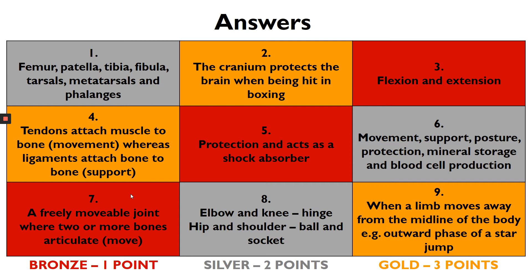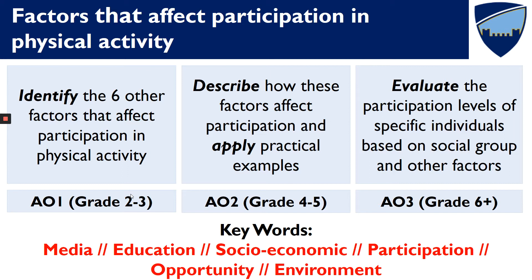Add up your answers, add up your points, see how many points you've got. So this week's lesson we're going to look at factors that affect participation in physical activity. We're going to identify the six other factors — that's sort of grade two to three level of knowledge. We're going to describe how they affect participation using practical examples, and then to get the higher grades, the sort of AO3 style level of knowledge, we're going to evaluate the participation levels of specific individuals or look at scenarios based on social groups and other factors.